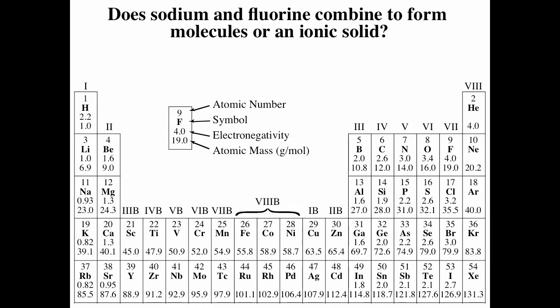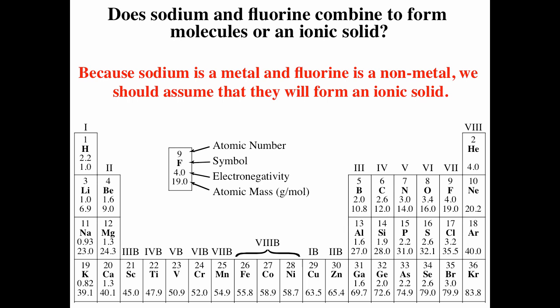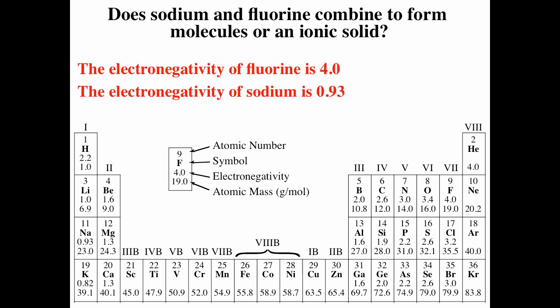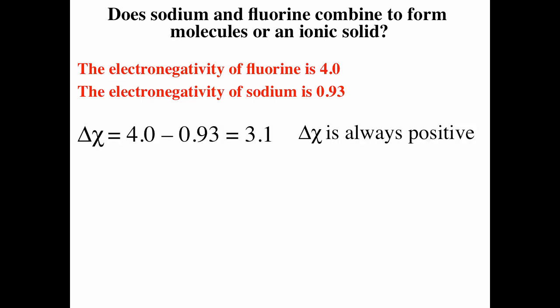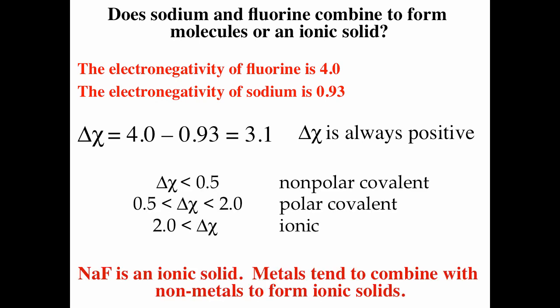A question you could see: does sodium and fluorine combine to form molecules or an ionic solid? Fluorine is a non-metal and sodium is a metal, so we'd expect an ionic compound. We can also use the difference in electronegativity: the electronegativity of fluorine is 4.0 and for sodium is 0.93, giving a difference of 3.07 — greater than 2 — confirming it forms an ionic compound. Both methods, metal-plus-non-metal and the electronegativity difference, agree; the difference in electronegativity is a slightly more accurate way of determining it.